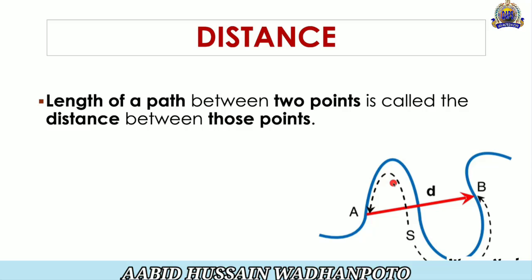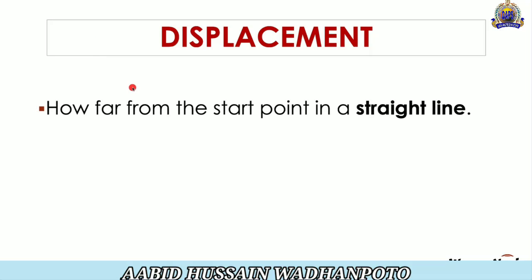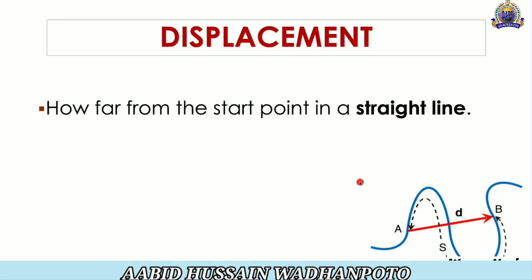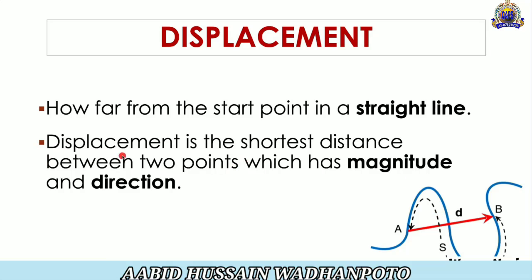The Length is whenever the body is moving with different directions to reach its destination. The arrow shows the destination, but the Blue Line shows how it is walking to its destination. What is Displacement? How far from the Start Point in a straight line. If a body moves straight from one point to another — as shown by the Red Line — the body moves from Point A to Point B along the Red Line, which is the particular path. Displacement is the shortest distance between two points which has magnitude and direction.